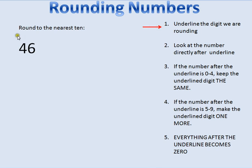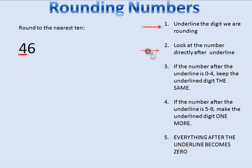In this case it says round to the nearest ten and I'm looking at the number forty-six. I'm going to underline the digit in the tens place. Then step two says look at the number directly after the underline — in this case it's going to be the ones place.